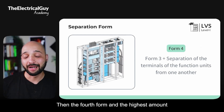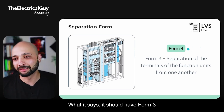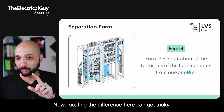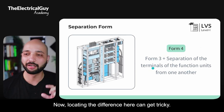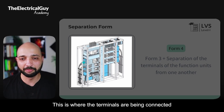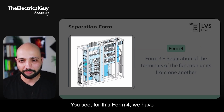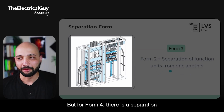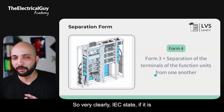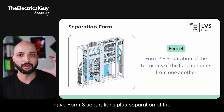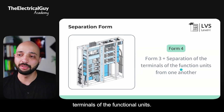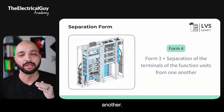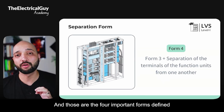Form 4 provides the highest amount of safety. It requires Form 3 plus separation of the terminals of the functional units from one another. Focus on the terminal connection area of the MCCBs — in Form 4 this area is separated, whereas in Form 3 it is open with no separation provided. Everything is insulated: all terminals of all functional units are insulated from one another. Those are the four forms defined by the IEC.